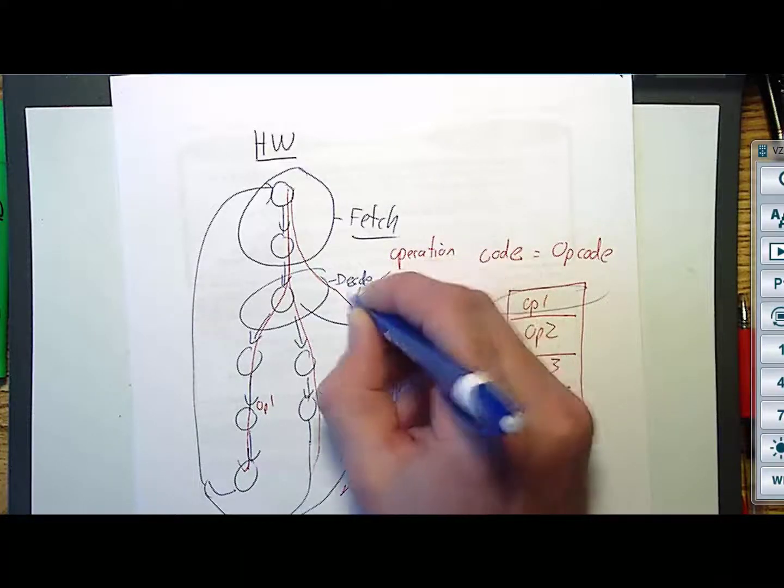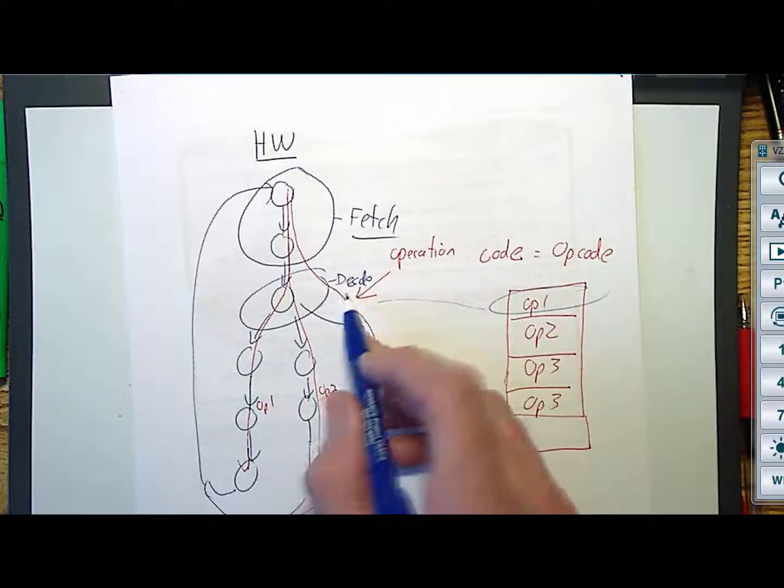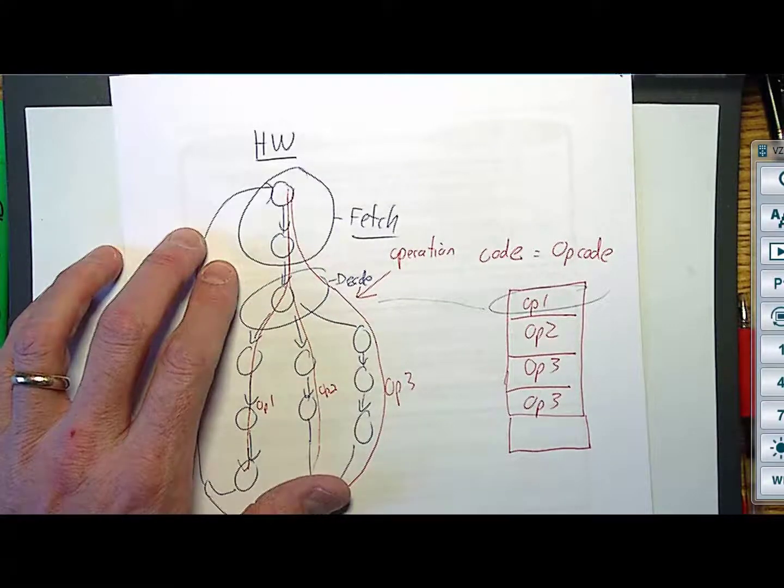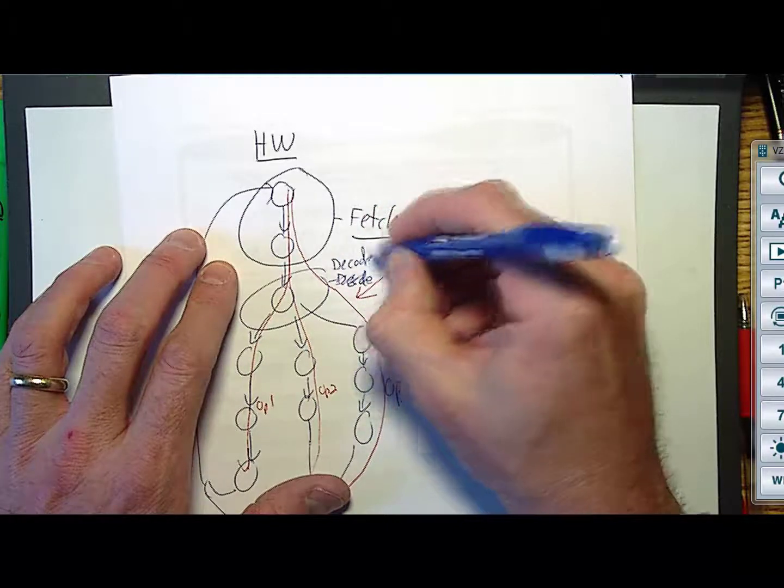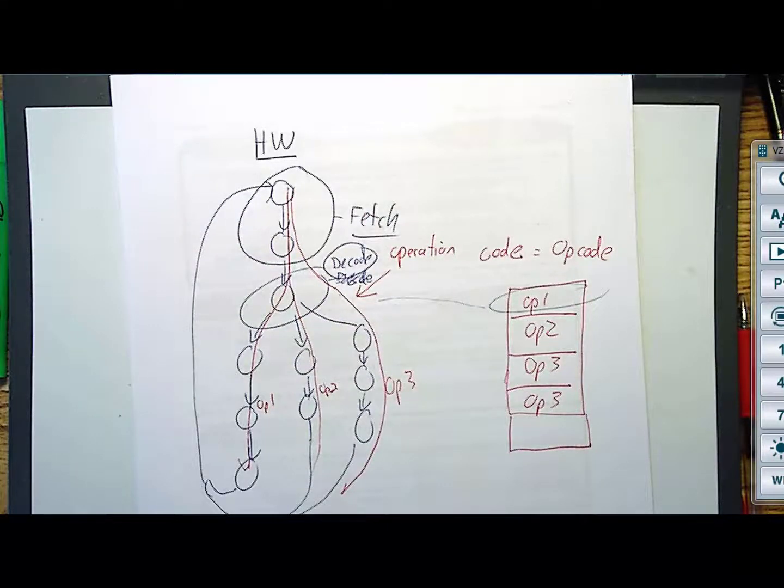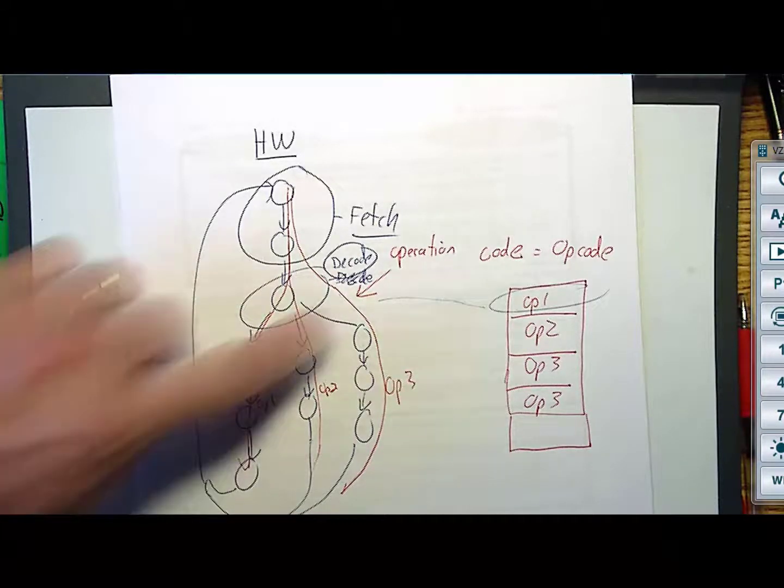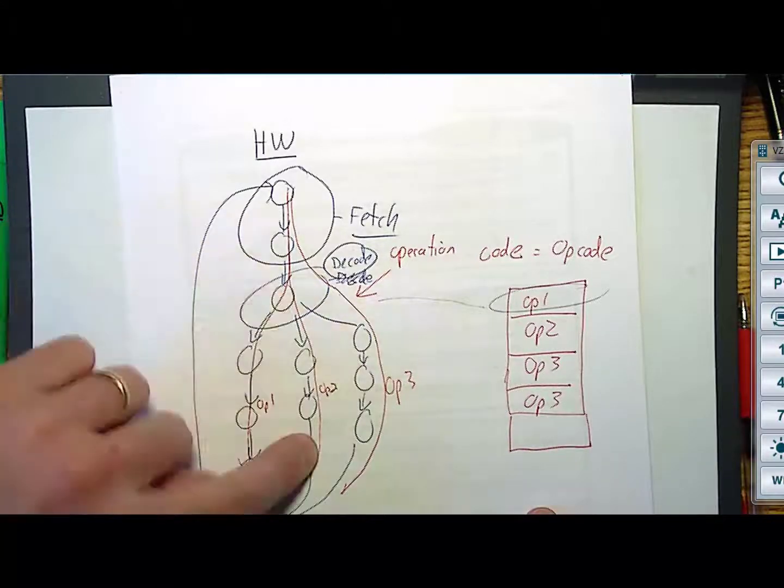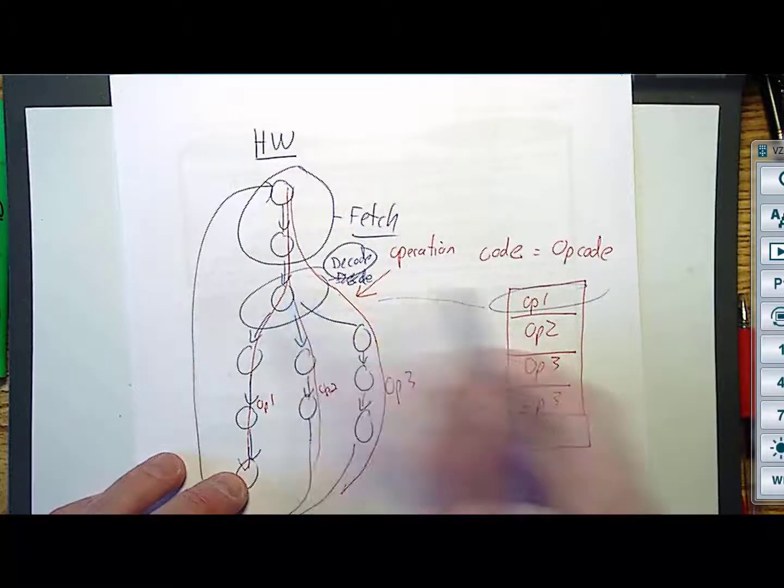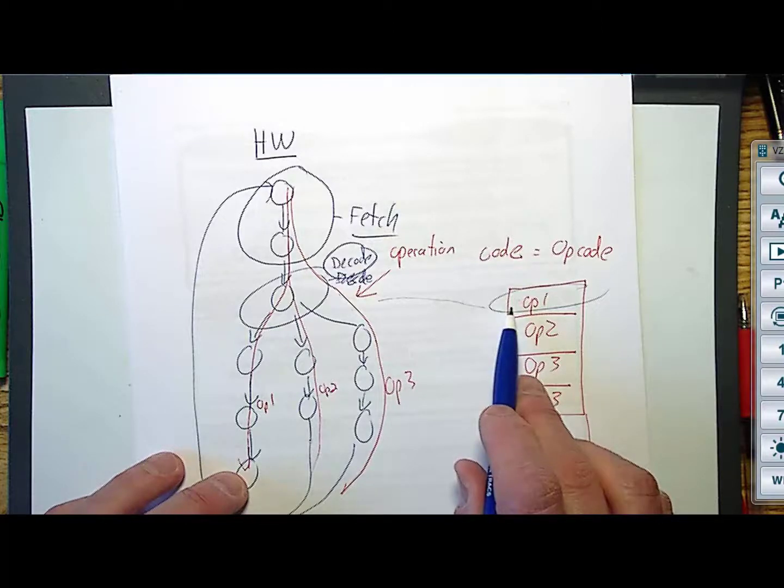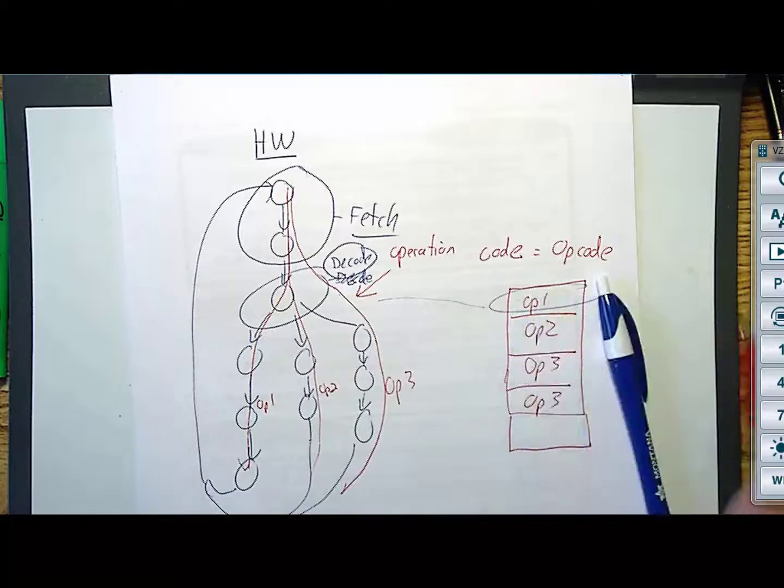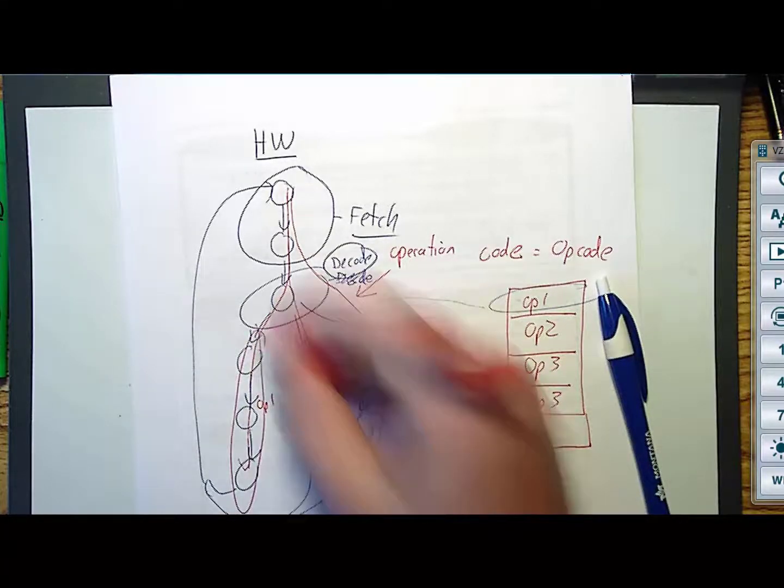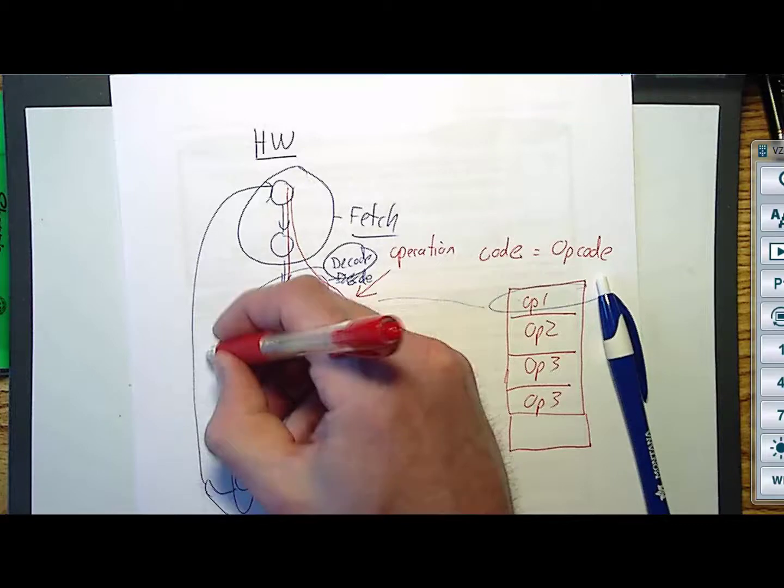So the decode, it takes that operation code, and it looks at it and says, oh, this sequence of bits means go down this path right here. Or it's a different one, and it says go down this path, or it's a different one and go down this path. So we decode that code, the opcode, and then what we do is once we know what it's trying to do, we go down one of the paths. And that would then be called the execute.